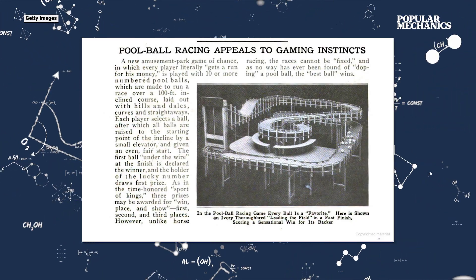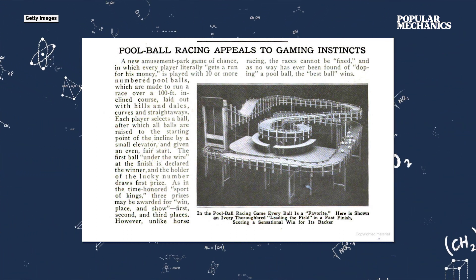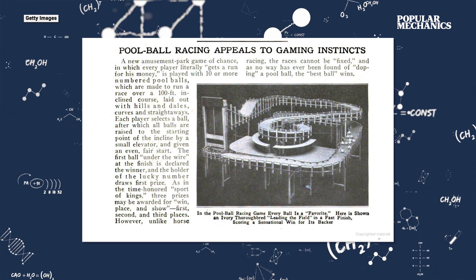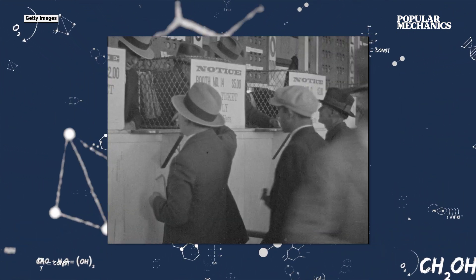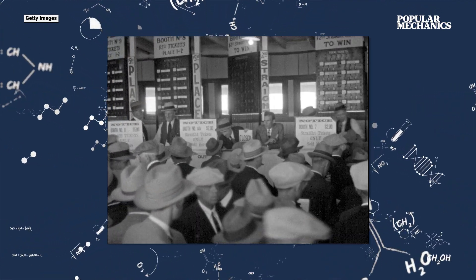In April 1921, Popular Mechanics reported on the advent of a thrilling new sport, pool ball racing. Gamblers placed their bets as ten pool balls whizzed down a hundred foot trap. Our reporter cheekily wrote at the time that unlike horse racing, the races can't be fixed. And, as there's never been any way found of doping a pool ball, the best ball always wins.